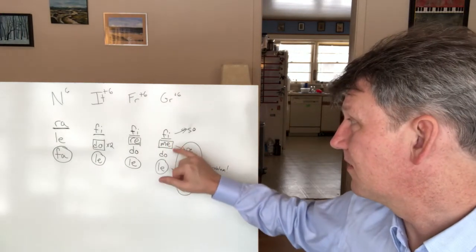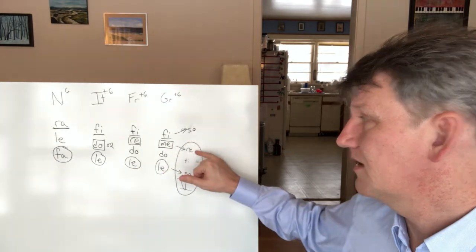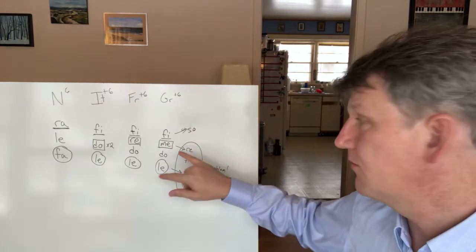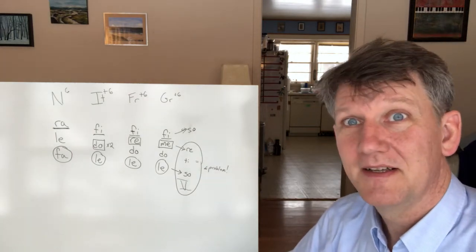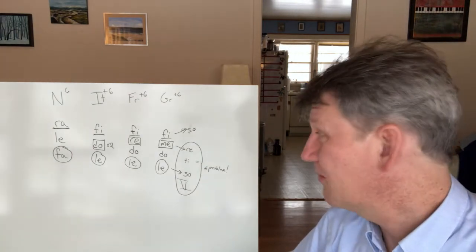And so in a German chord, Me is going to want to resolve down to Re. But if you do that right away, you're going to get parallel fifths, and you know that's verboten in most of common practice.